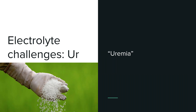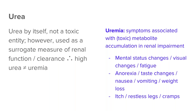The final electrolyte I wanted to discuss is urea. Urea by itself is not actually a toxic entity, but we use it in nephrology as a surrogate measure of renal function and clearance. A high urea does not necessarily equal uremia. Uremia, as we use the term, is related to symptoms associated with toxic metabolic accumulation seen in renal impairment. This manifests as mental status changes, fatigue or mood changes, anorexia, taste changes with a metallic taste, nausea, vomiting, weight loss, itch, restless legs, and cramps — all giving us a semblance of a more uremic state.